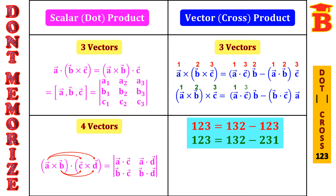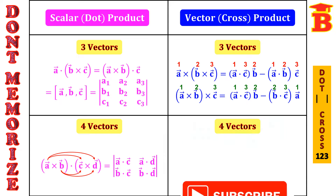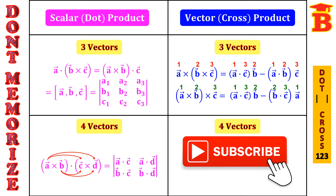So 1, 3, 2: 1 is A vector, 3 is C vector, into 2 is B vector. Minus 2, 3, 1: 2 is B vector, 3 is C vector, into 1 is A vector. In the first formula, 1 is the separate vector, so use the technique 1, 3, 2 minus 1, 2, 3. In the second formula, 3 is the separate vector, so use the technique 1, 3, 2 minus 2, 3, 1.